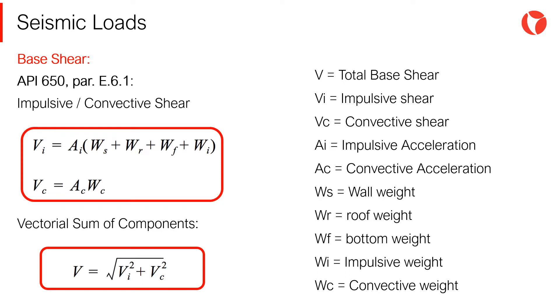As indicated in section E6.1.5 of the code, the base shear of the tank will be the vectorial sum of the impulsive and convective components, that is, the square root of the squares. On the other hand, the shear is calculated as the spectral acceleration multiplied by the effective weight of both components, impulsive and convective. It should be mentioned that the impulsive shear takes into account the weight of the tank components, while for the convective shear only the stored product intervenes.